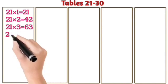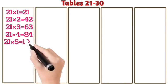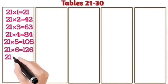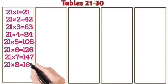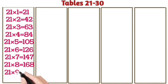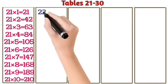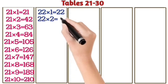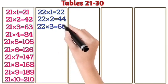21 ones are 21. 21 twos are 42. 21 threes are 63. 21 fours are 84. 21 fives are 105. 21 sixes are 126. 21 sevens are 147. 21 eights are 168. 21 nines are 189. 21 tens are 210.